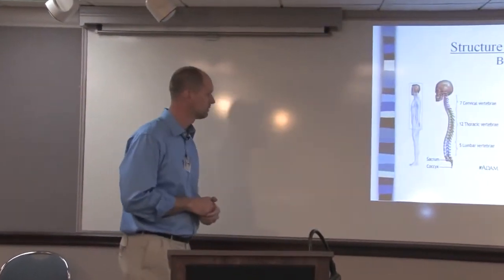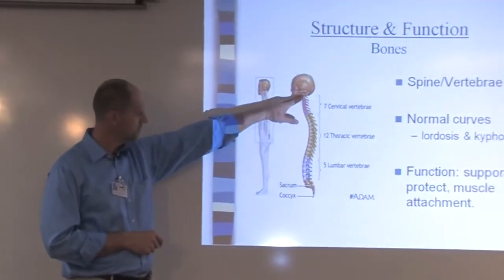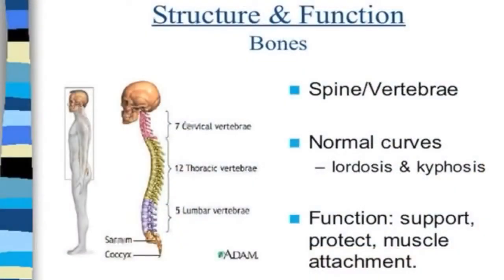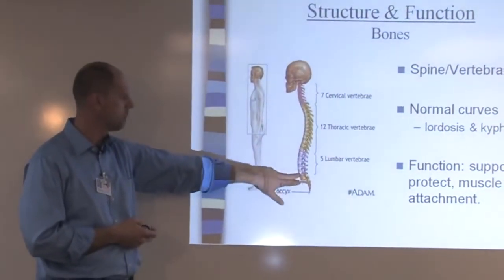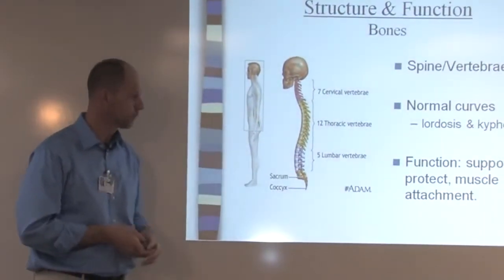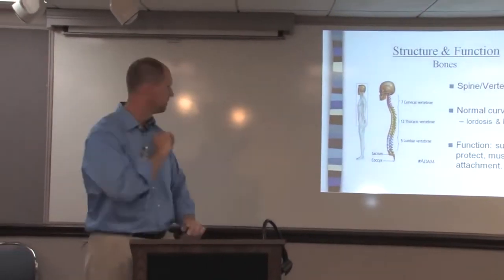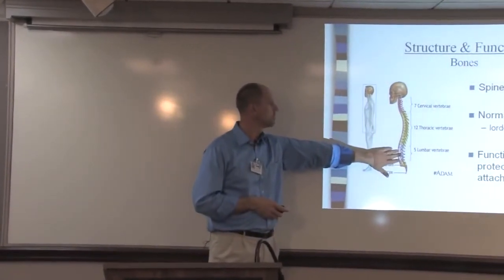Let's start with the bone structure. The entire spine, from the base of your skull all the way down to the tailbone, is made up of individual vertebrae. We can classify those vertebrae based on the region: seven in the neck, twelve in the mid-back, and five vertebrae in the lumbar spine. We're going to be focusing our attention on the low back — the lumbar spine.